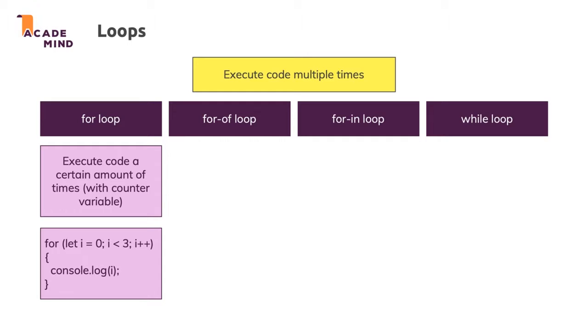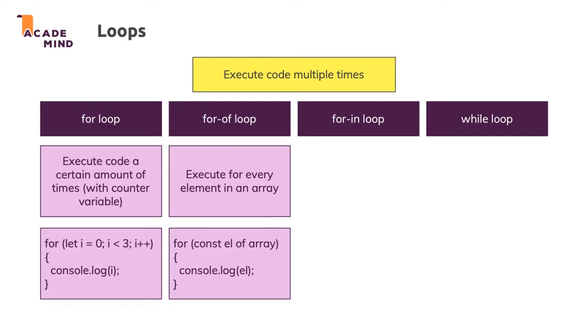Now, another loop you have, which is a bit newer but now also very well supported in JavaScript, is the for-of loop. That executes for every element in an array. It allows you to execute code for every element in an array. It looks like this, kind of like the first for loop but a bit different.